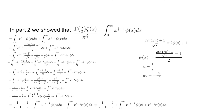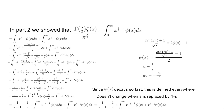Since psi of x decays extremely fast, this integral converges for any value of s. Also, if we replace s by 1 minus s, this expression stays the same — it is invariant under s mapping to 1 minus s. Therefore we have shown that gamma of s over 2 times zeta of s divided by pi to the power of s over 2 equals gamma of 1 half minus s over 2 times zeta of 1 minus s over pi to the power of 1 half minus s over 2, which is the functional equation of the Riemann zeta function.